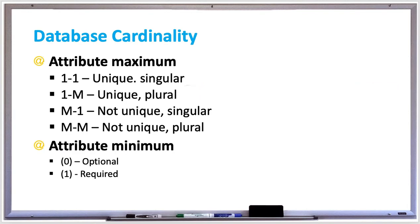Some ER diagrams can show lots of detail, such as having the cardinality on each of the attributes. The different attribute maximums are: one-to-one, which is unique and singular; one-to-many, which is unique and plural; many-to-one, which is not unique but singular; and many-to-many, which is not unique and plural. There are two attribute minimums: zero in parentheses means optional, and one in parentheses means required.